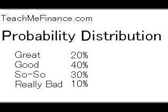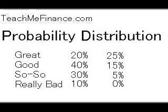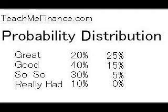However, saying things like good and great and so-so and really bad isn't really clear. It's better if you can quantify the economic outcome. For example, let's say that if the economy is great, you expect your business is going to get a 25% return on investment. If the economy is good, you expect a 15% return on investment. If the economy is just so-so, about a 5% return on investment, and if the economy is really bad, you don't think you're going to make any profit at all — so a 0% return on investment.